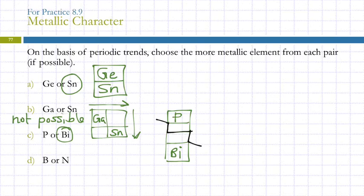Boron or nitrogen? Boron. So we're just looking at going across. Which one's closer to the metals? Boron. So boron is the more metallic. Is boron a metal? No, it's a semi-metal. But it's more metallic than nitrogen.